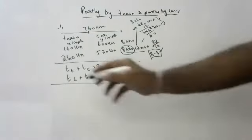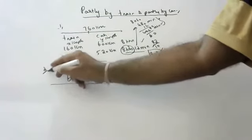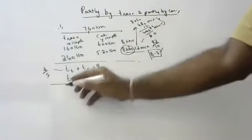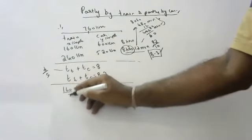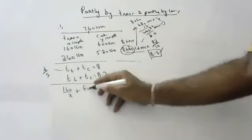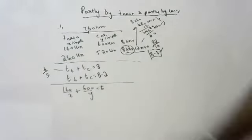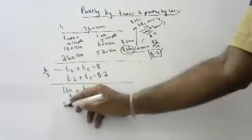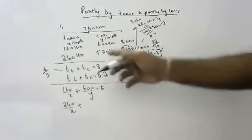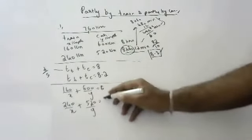Time equals distance divided by speed. In the first case: 160/x plus 600/y equals 8. This is the first equation. In the second case: 240/x plus 520/y equals 8.2.